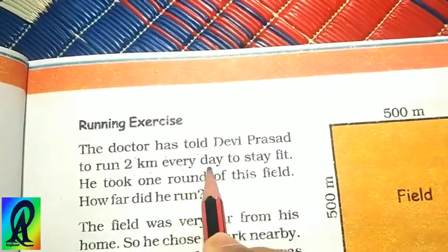The topic is Running Exercise. The doctor has told Devi Prasad to run 2 km every day to stay fit. Here he took one round of this field. This is the field with a square shape. A square has equal sides - that is 500, 500, 500, and 500 meters.